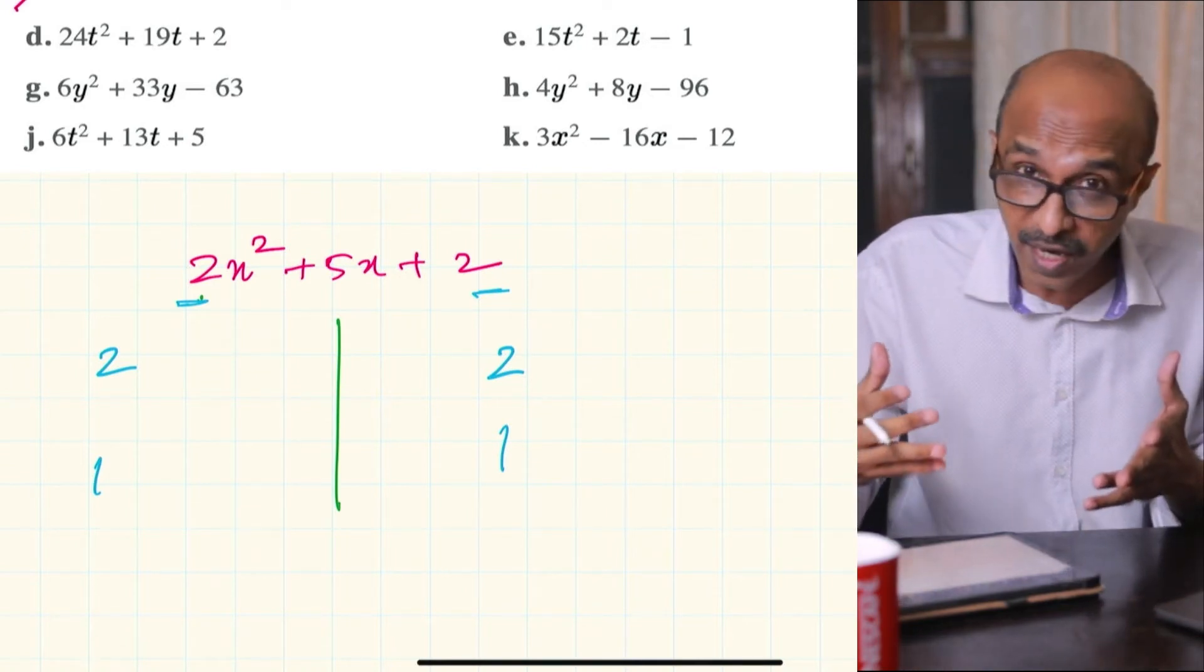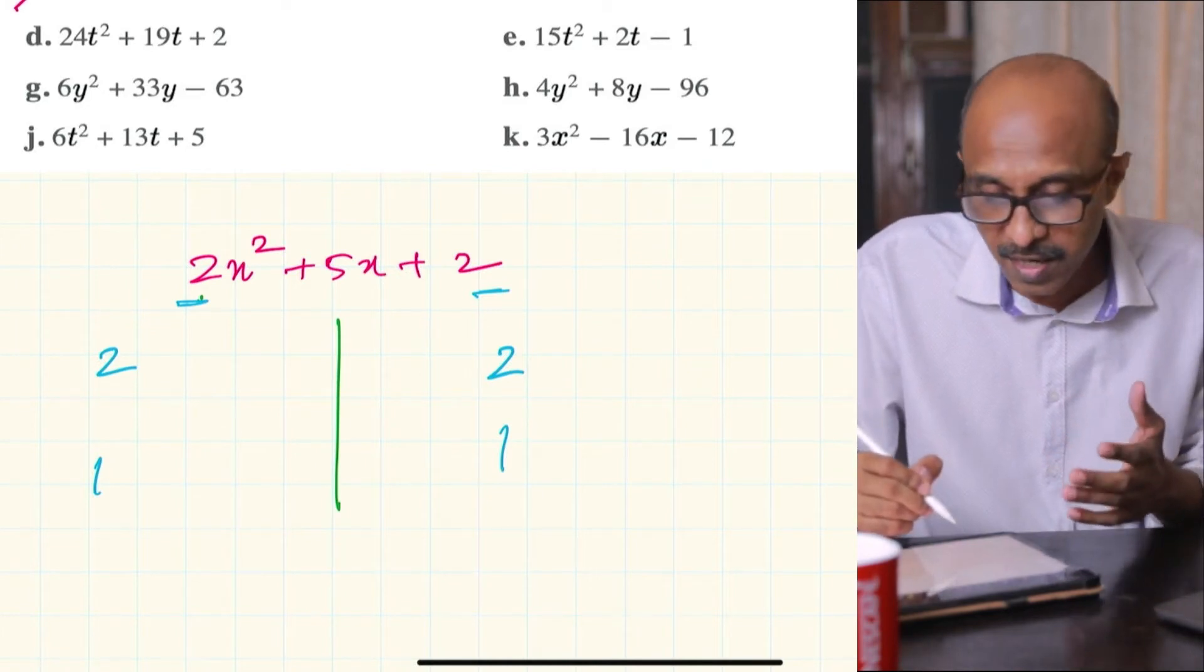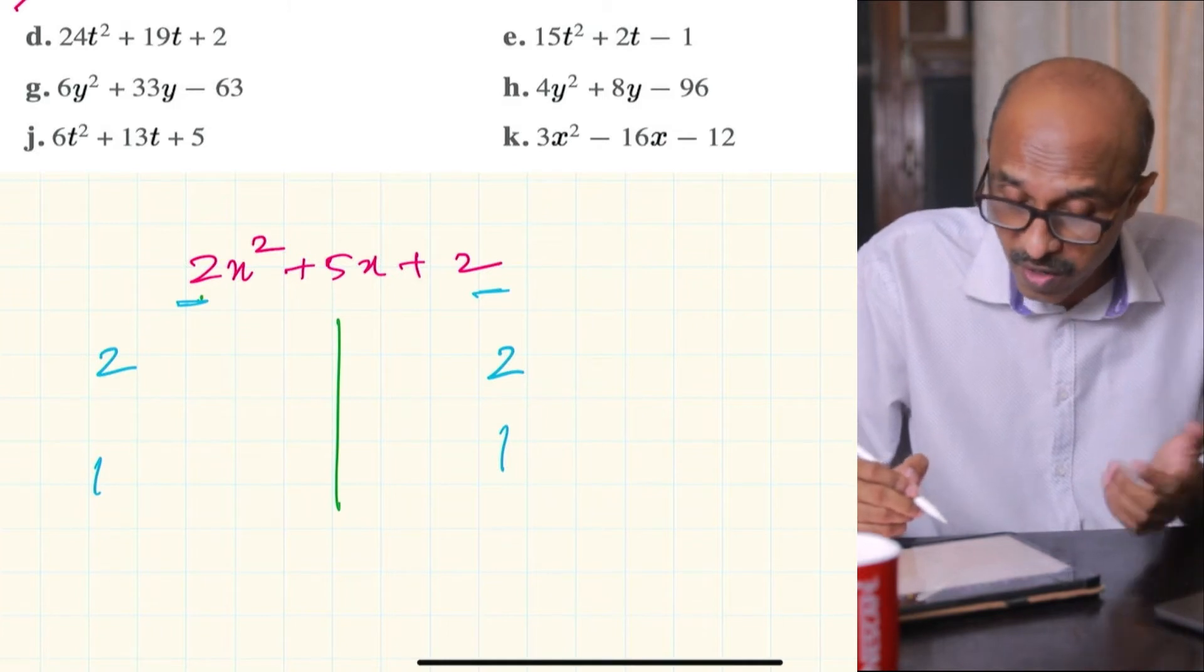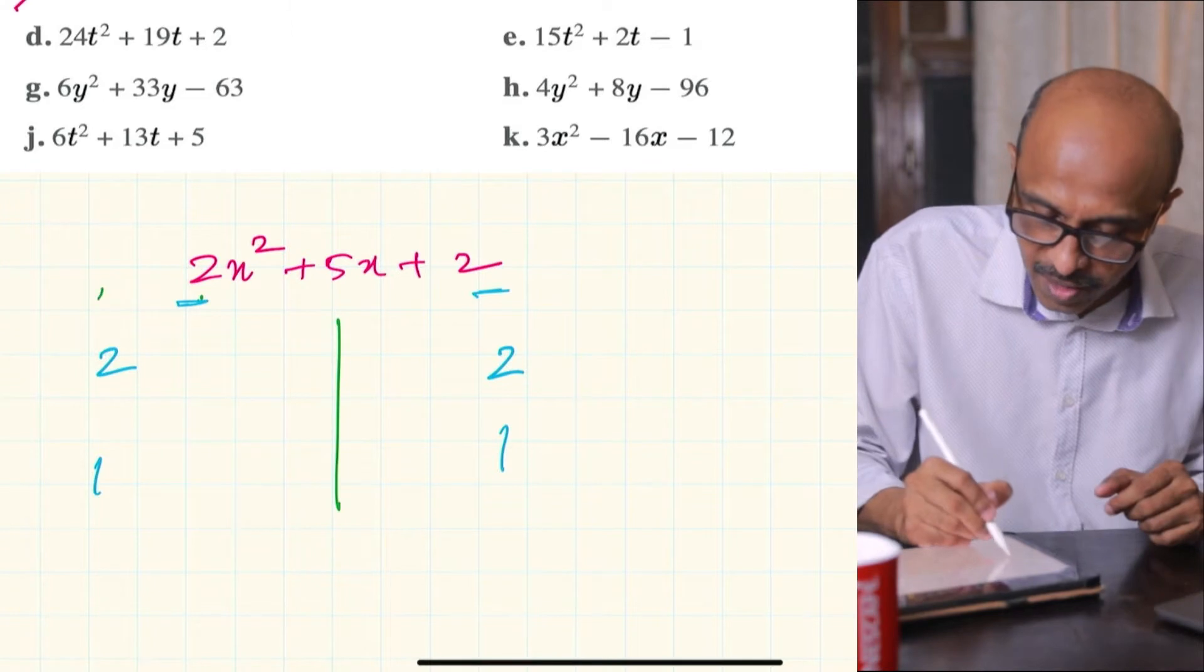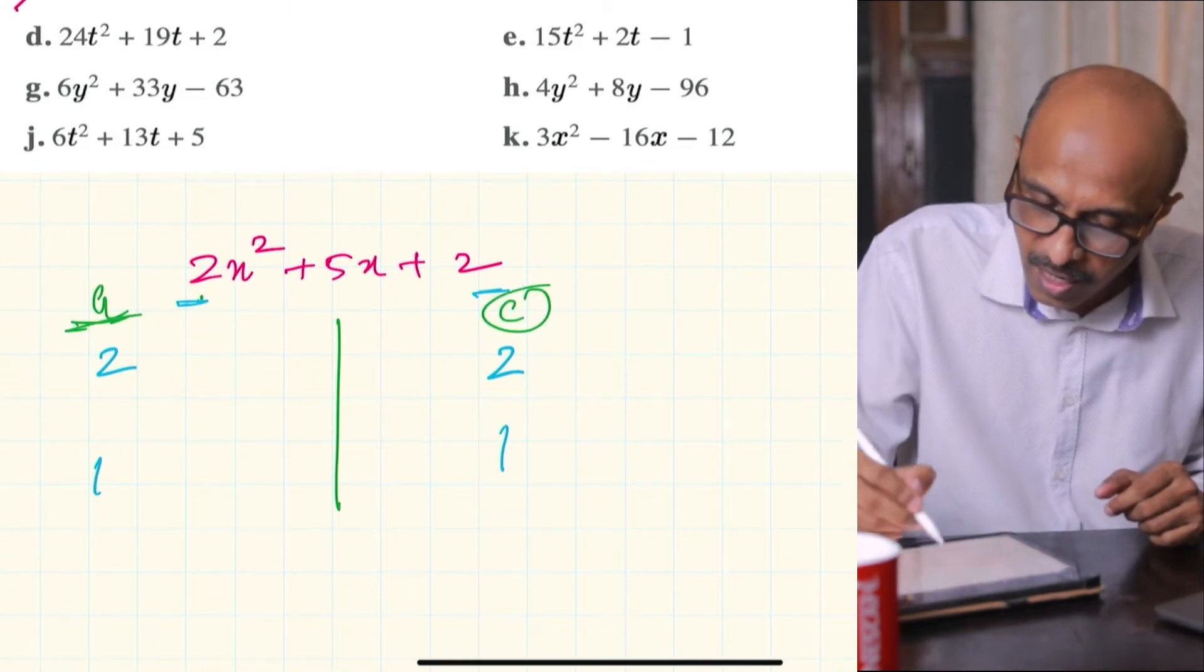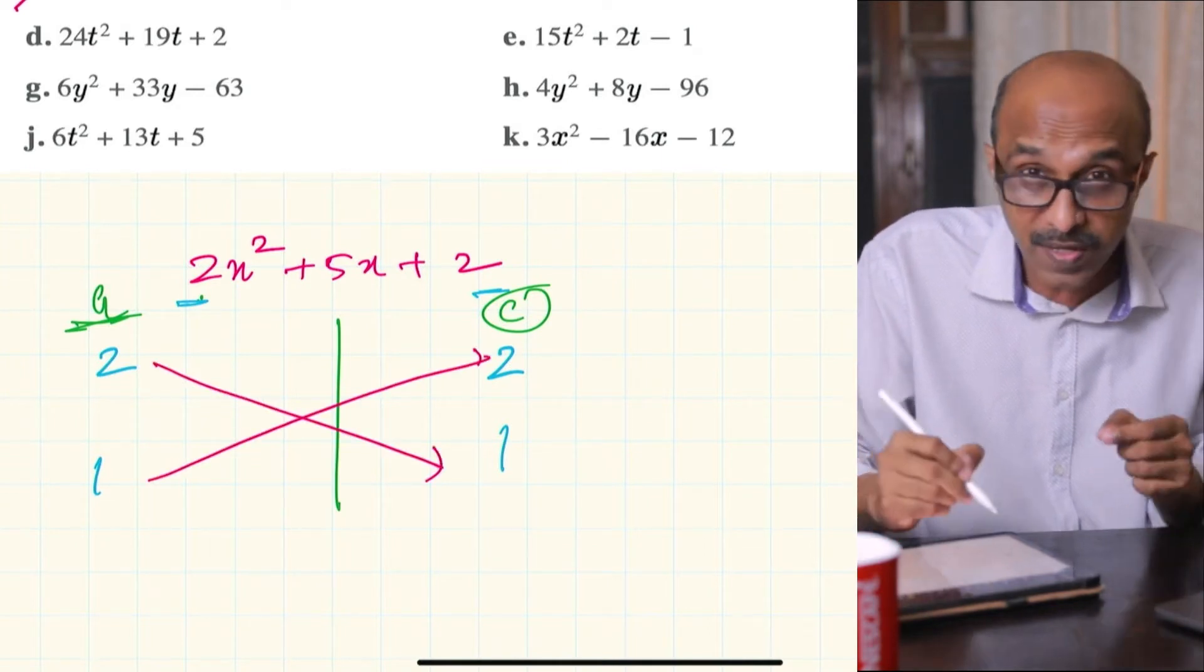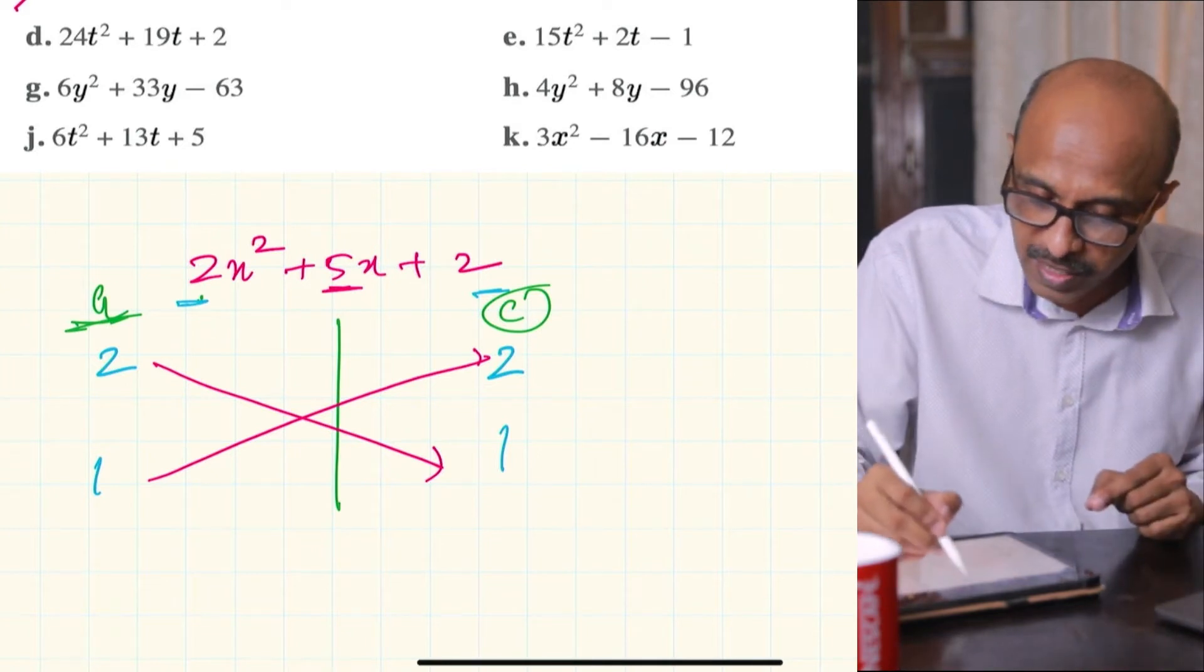What we need to be careful about is the order in which we place them. This can take some time initially, a little bit of practice and knowing all your multiplication tables. For these kind of questions where the coefficient of a is other than 1, you might need to memorize multiplication tables even up to 40 and beyond. After you've written down these factors, you basically just have to cross multiply and see whether they add up to the middle term with the correct sign.